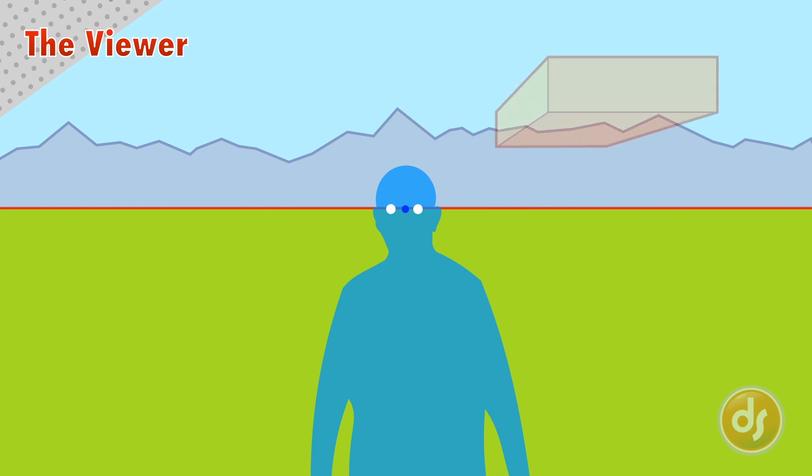The viewer is looking up at objects above the horizon line, and they are looking down on objects below the horizon line. The horizon line stays at the level of the eye. The viewer can look up or down, and the horizon line stays at the original eye level.